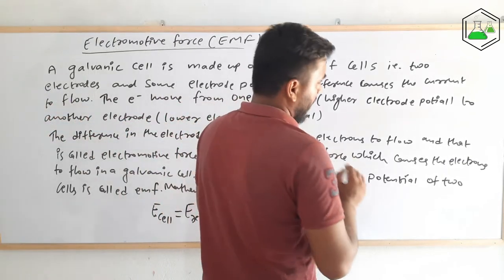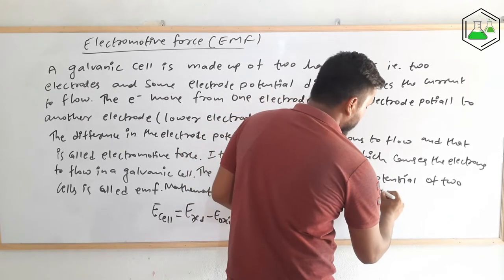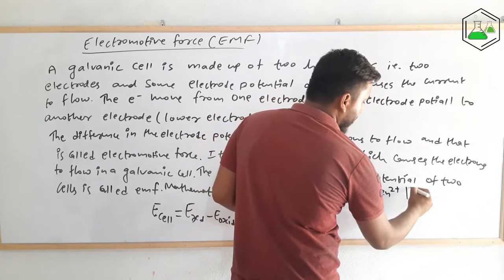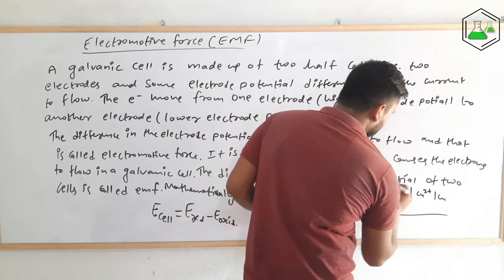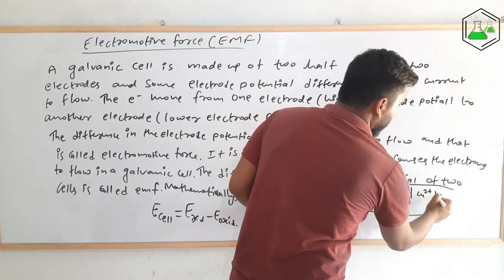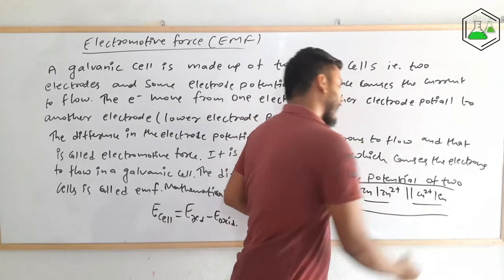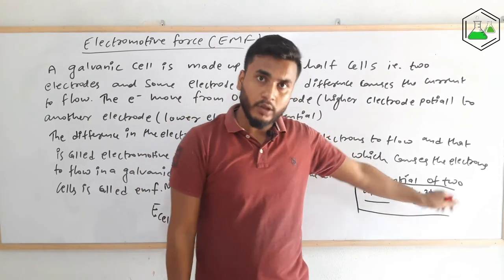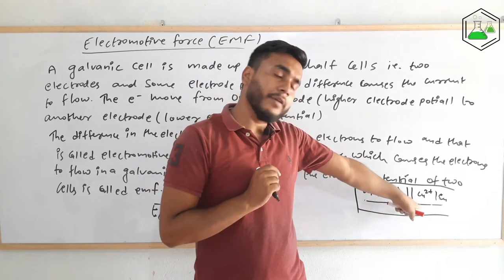Now, looking at cell notation — in the Daniel cell, zinc converts to Zn²⁺ on the left, and Cu²⁺ converts to Cu on the right. This is the cell notation of a Daniel cell. The first half always represents the anode (oxidation), and the second half always represents the cathode (reduction).